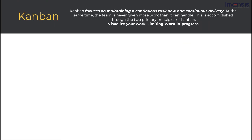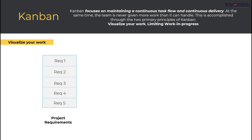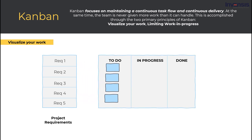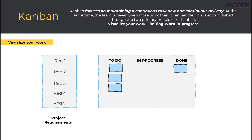Kanban focuses on maintaining a continuous task flow and continuous delivery. At the same time, the team is never given more work than it can handle. This is accomplished through the two primary principles of Kanban: visualize your work and limit the work-in-progress (WIP). First, you collect the work required for a project and document it on cards. The cards are then placed on the Kanban board, which is split into categories of work to be done, work in progress, and completed work. Teams can add more categories as necessary to better visualize their process. Each task is recorded on a Kanban card. As each card is addressed, it moves to the next phase until it is moved completely through the workflow. This is how the entire team sees the status of work being done.